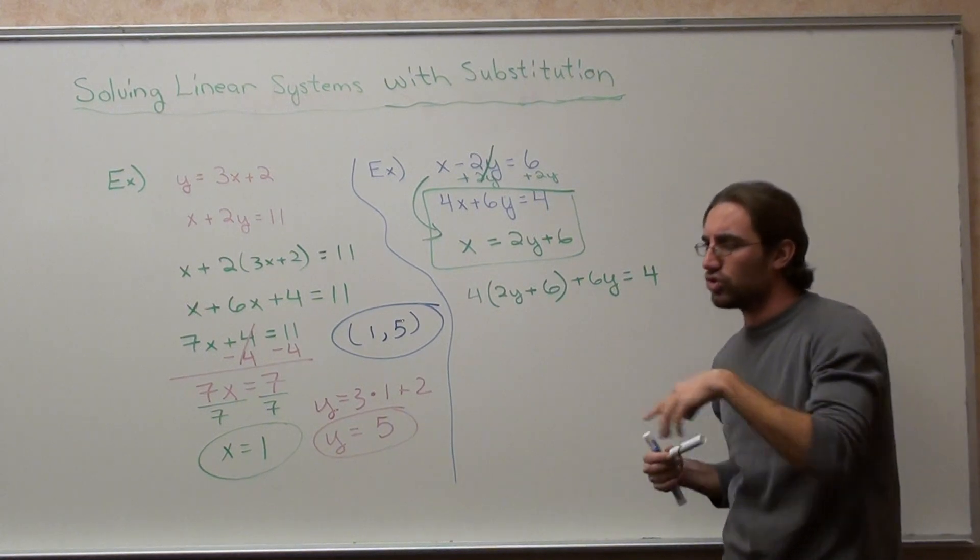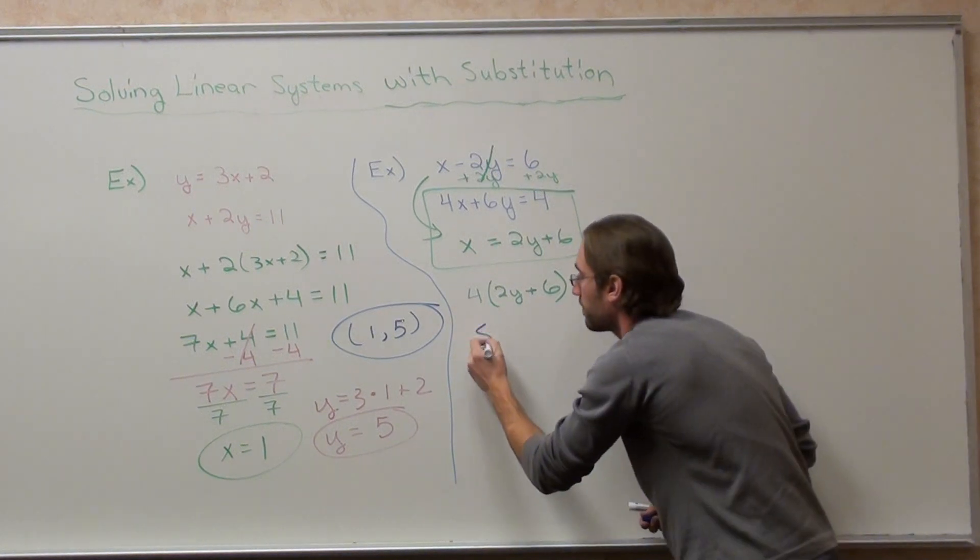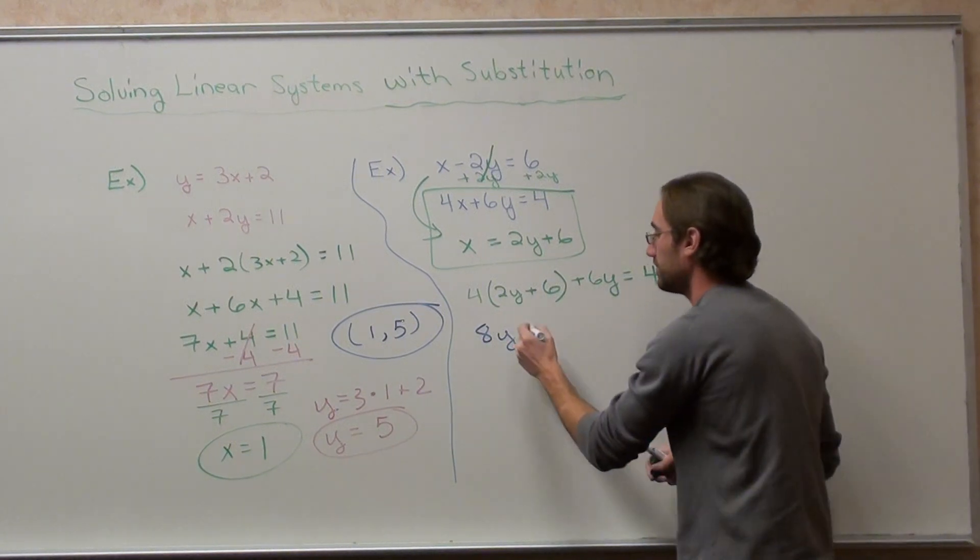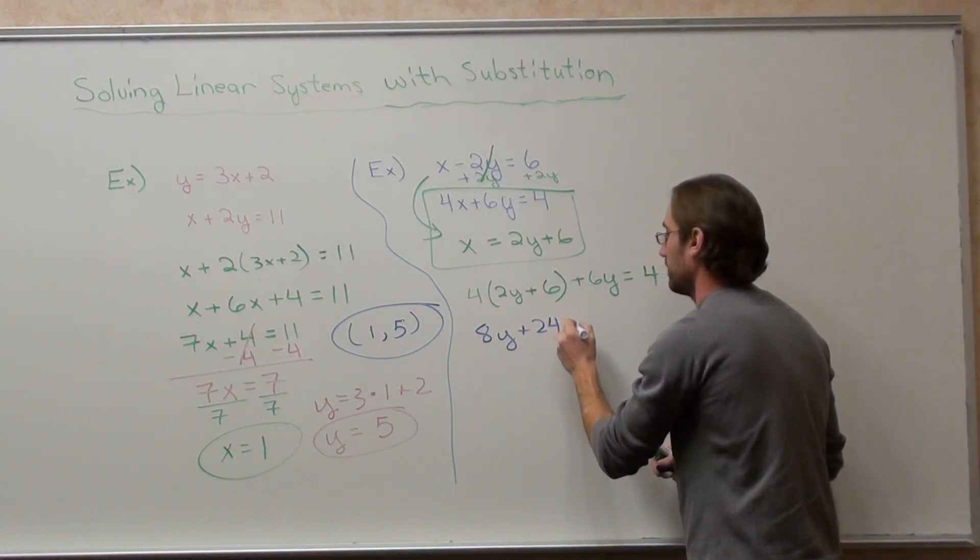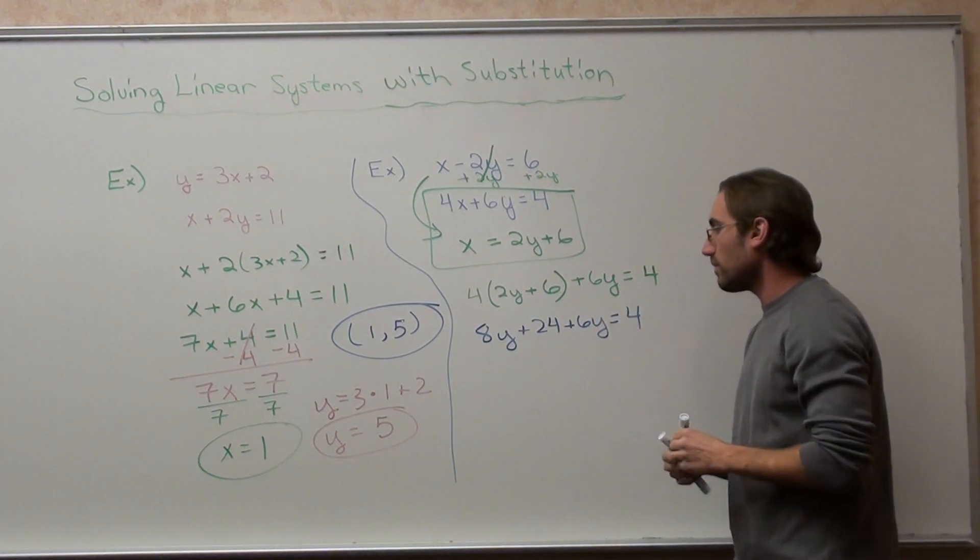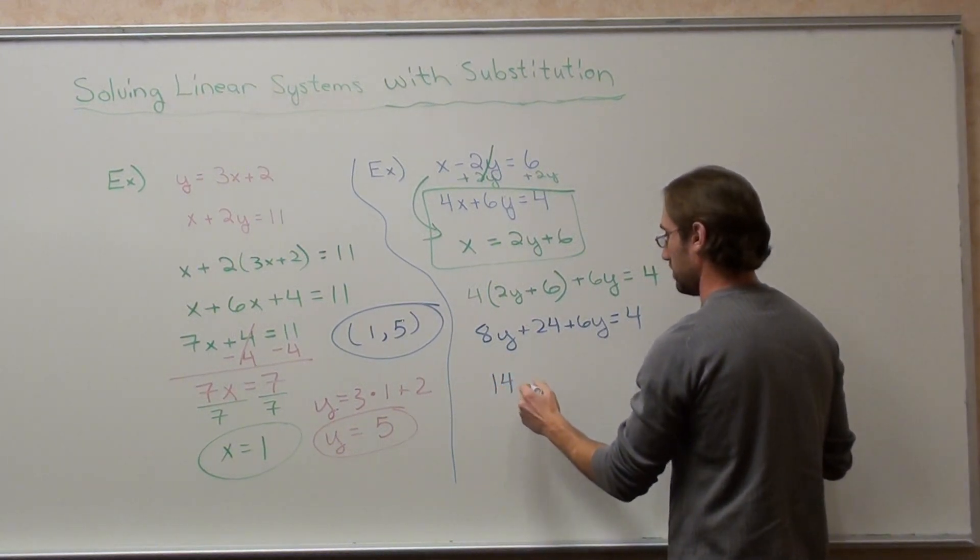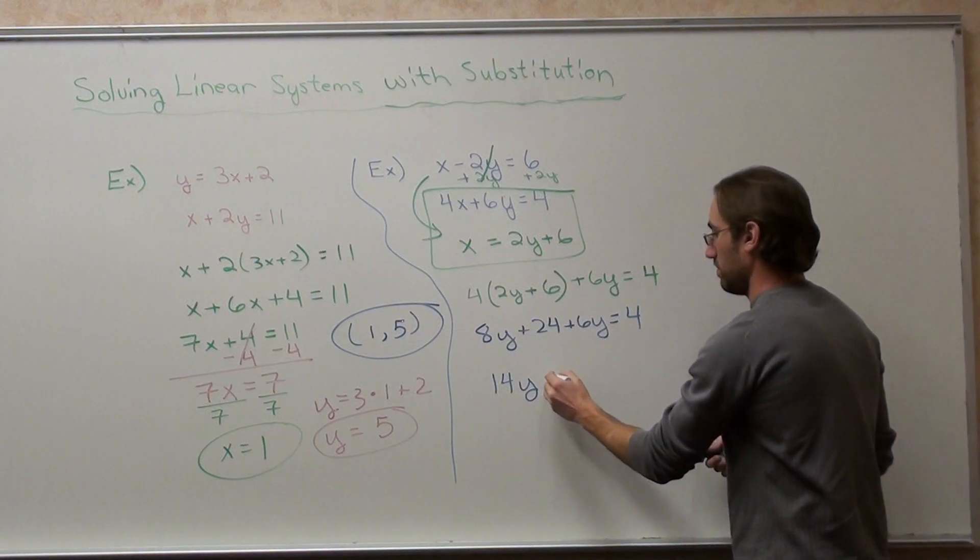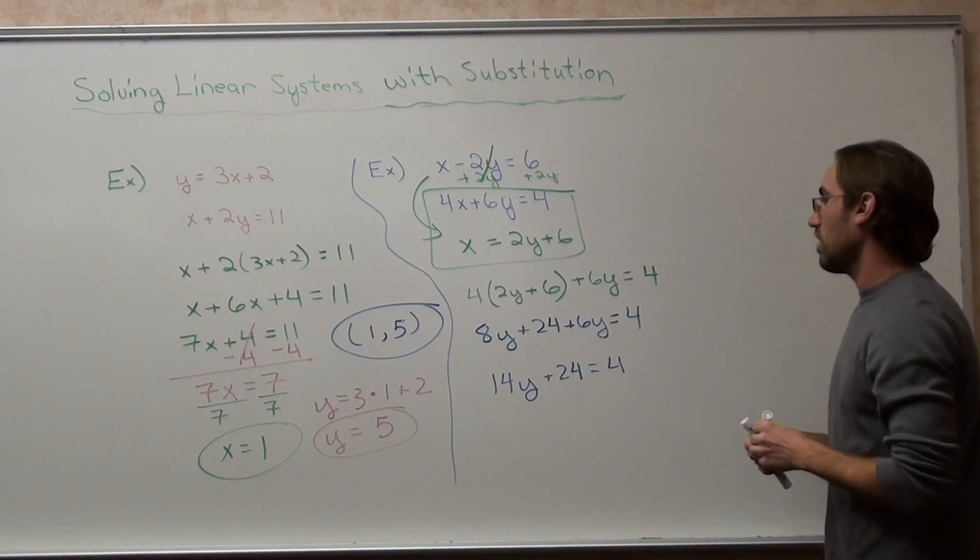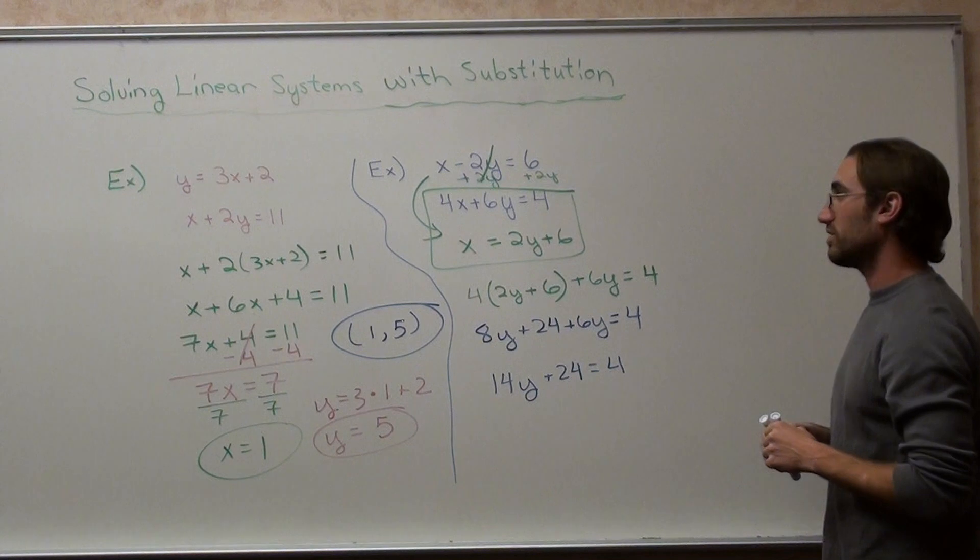Go ahead and distribute and solve, and you'll be good. 4 times 2y, 8y. 4 times 6 is plus 24, plus 6y equals 4. 8y plus 6y is 14y. 14y plus 24 equals 4. Now let's finish it off.